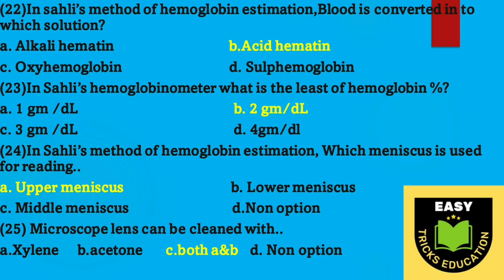Question number twenty-two: in Sahli's method of hemoglobin estimation, blood is converted into which solution? Option B, acid hematin. Question number twenty-three: in Sahli's hemoglobinometer, what is the least count of hemoglobin percentage? Option B, 2 grams per deciliter, is the correct answer.